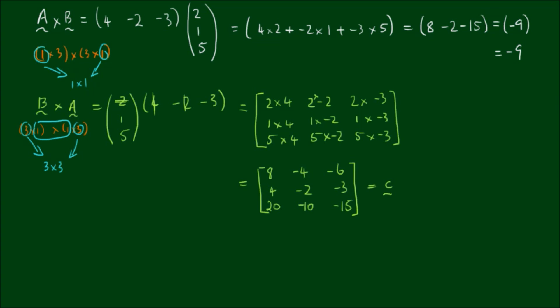So that's a fascinating result because in the one instance we end up just with a number and in the second instance we end up with a 3 by 3 matrix. And that's a really cool property of matrix multiplication.